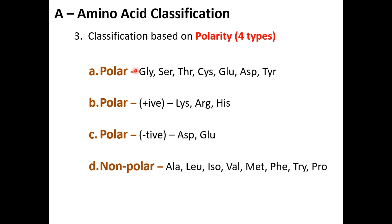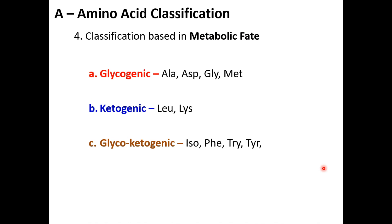Non-polar amino acids include: alanine, leucine, isoleucine, valine, methionine, phenylalanine, tryptophan, and proline. Then we have classification based on metabolic fate.